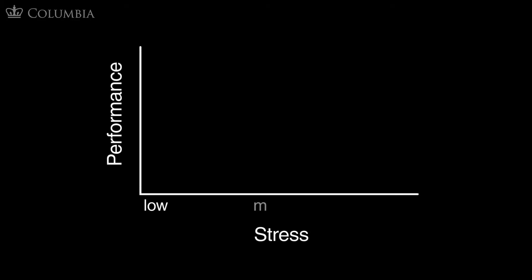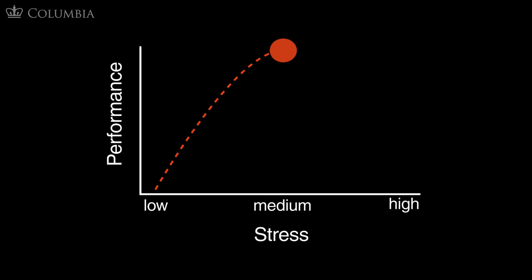The inverted U hypothesis proposes that increases in stress are typically accompanied by increases in quality of performance, but only to a certain point. After you reach a certain threshold, you experience diminishing returns, where rising stress actually results in deteriorating performance quality in certain tasks.